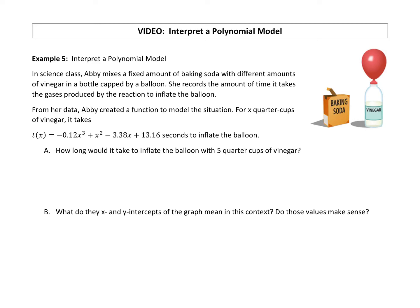All right, we made it to our last example. We're going to interpret a polynomial model. In science class, Abby mixes a fixed amount of baking soda with different amounts of vinegar in a bottle capped by a balloon. She records the amount of time it takes the gases produced by the reaction to inflate the balloon.